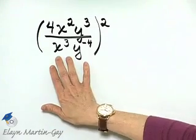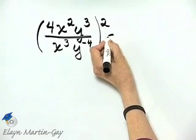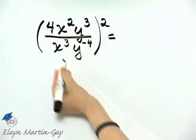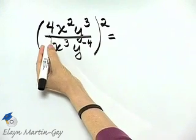Let's simplify this exponential expression and it's up to you. You can simplify within the parentheses first or you can square each factor. I'll begin by squaring each factor.